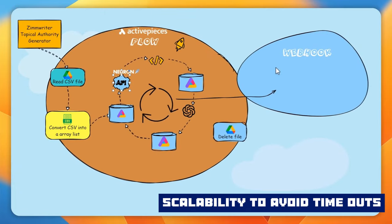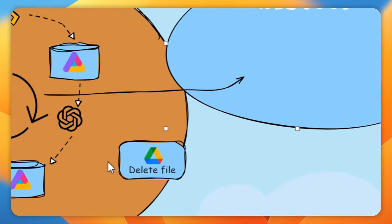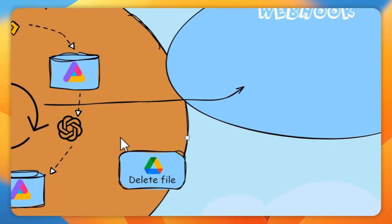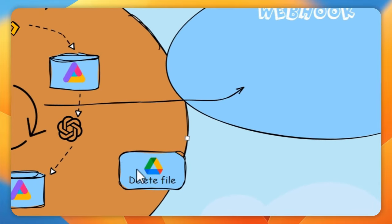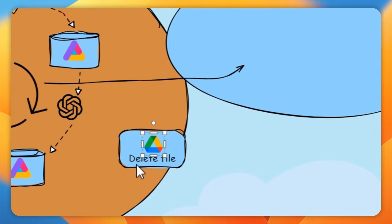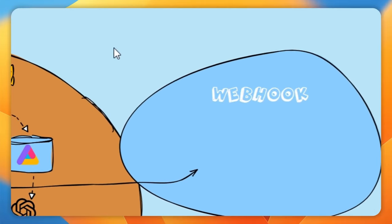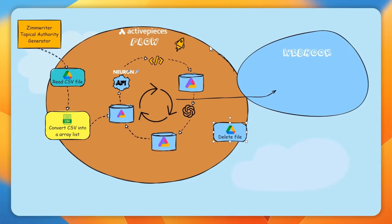Lastly, at the end we're going to be deleting that file from the Google Drive server just to keep it tidy and clean. That's going to be the ActivePieces flow that we're going to be working on today in this demonstration.